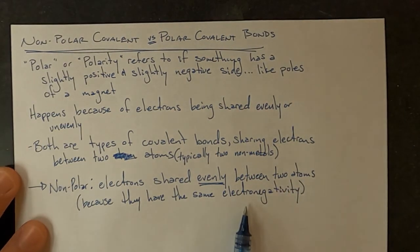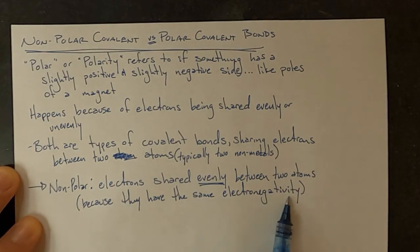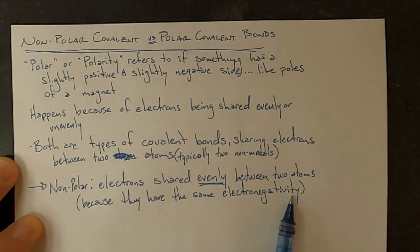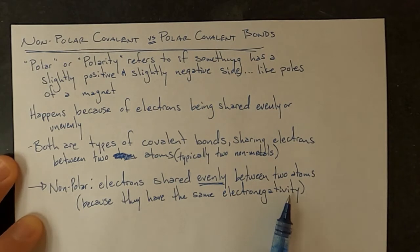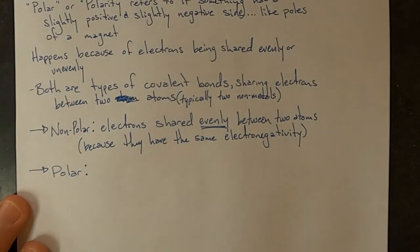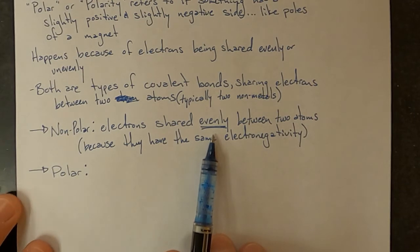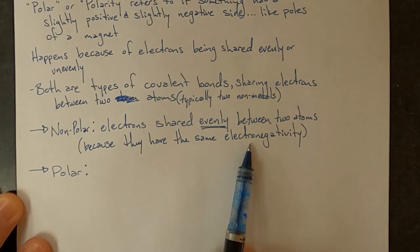The property that influences if the two atoms are going to share electrons equally is called electronegativity. Electronegativity is how much the atoms of an element pull electrons to itself. If they have the same value for electronegativity, neither of the two atoms in the bond pull the electrons more than the other. A polar bond is where the electrons are shared unevenly because the two elements do not have the same electronegativity — one pulls electrons more than the other.